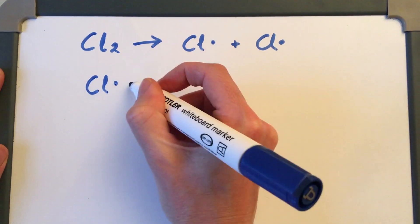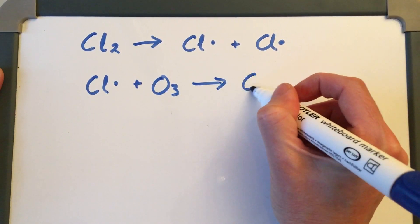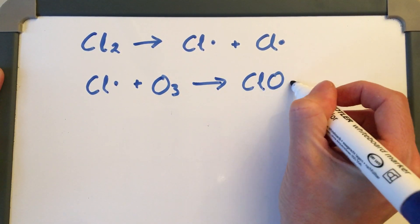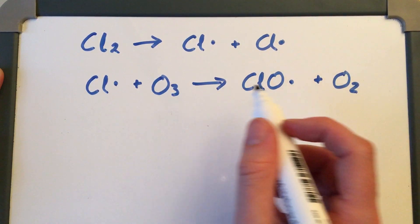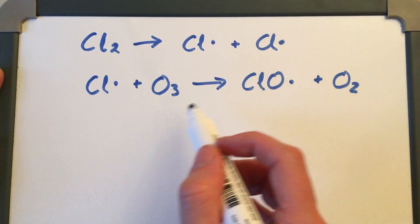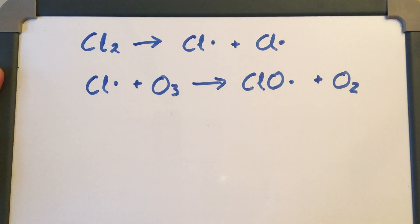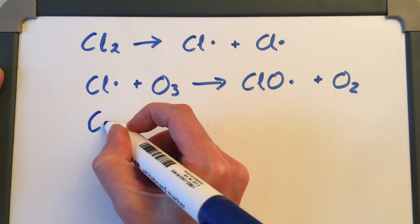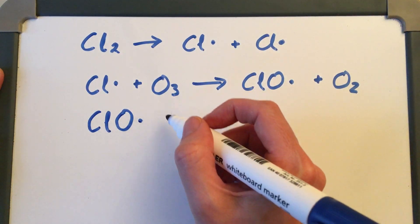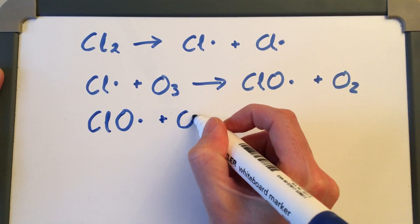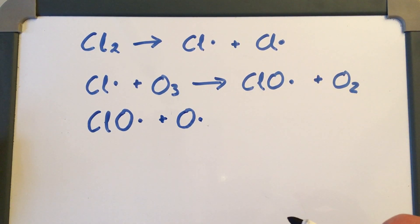The important thing is that we have formed our chlorine radicals. Chlorine radicals can then react with ozone, and that produces a chlorate radical and oxygen. In this reaction, we have lost an ozone molecule — so that's destroyed one ozone molecule.